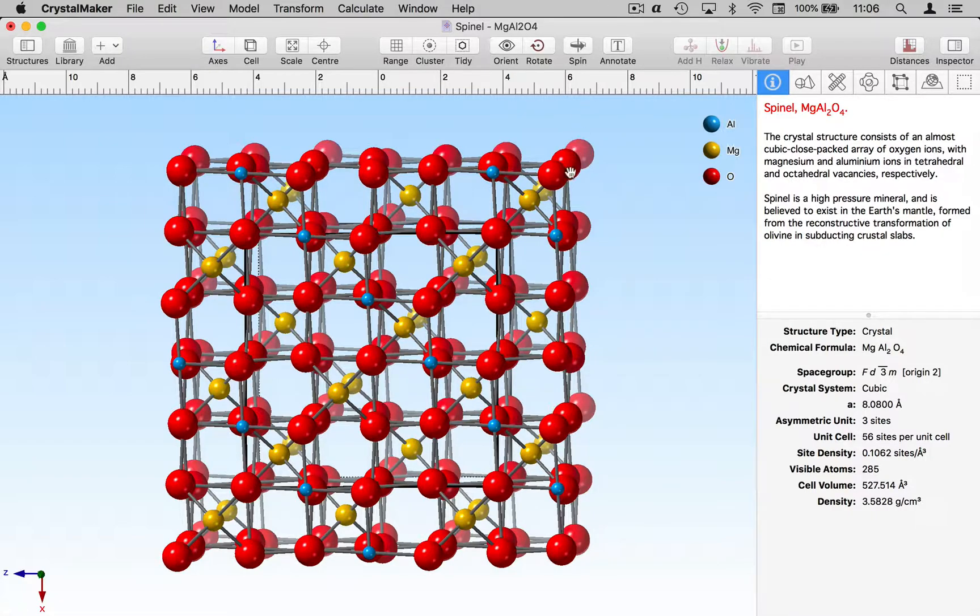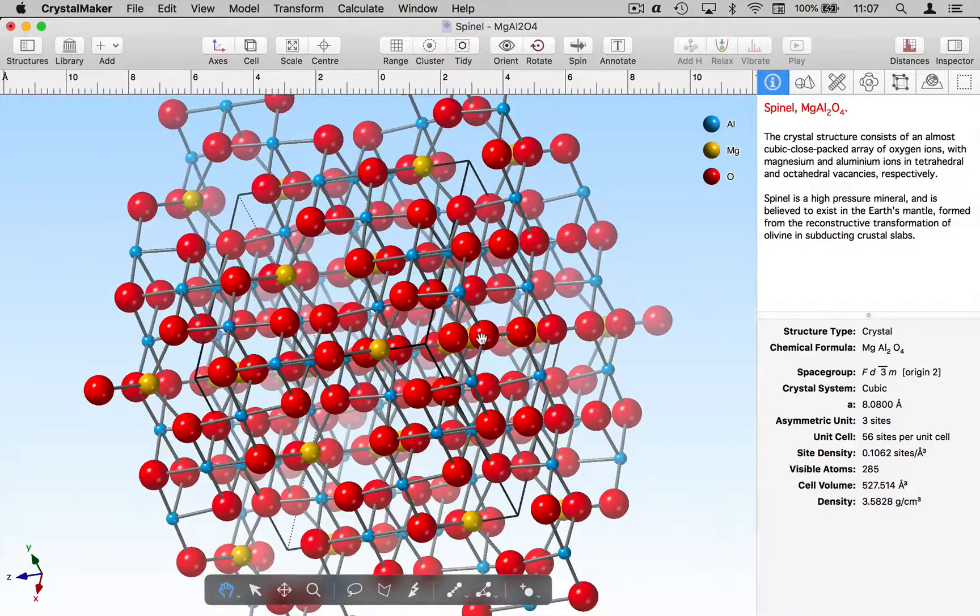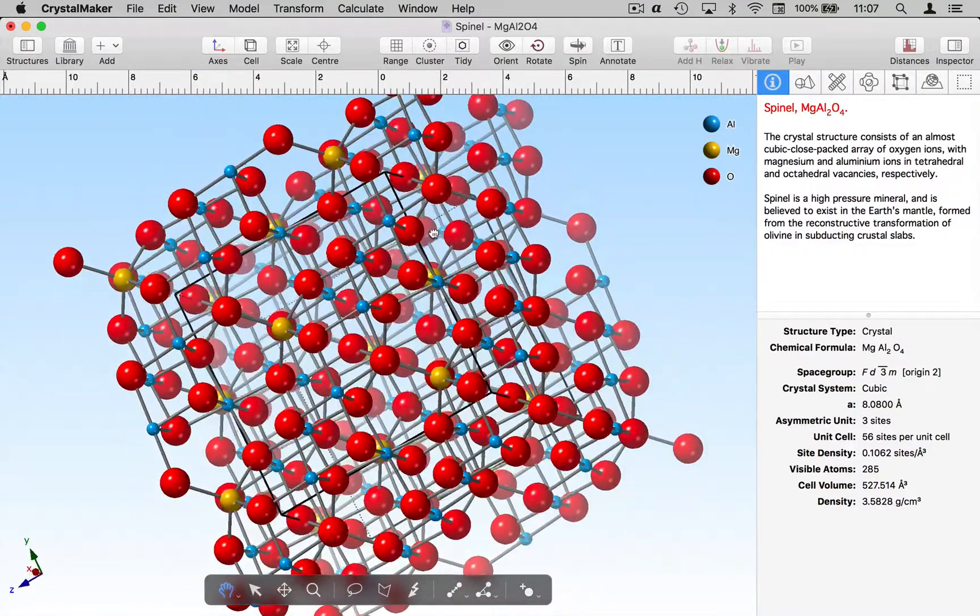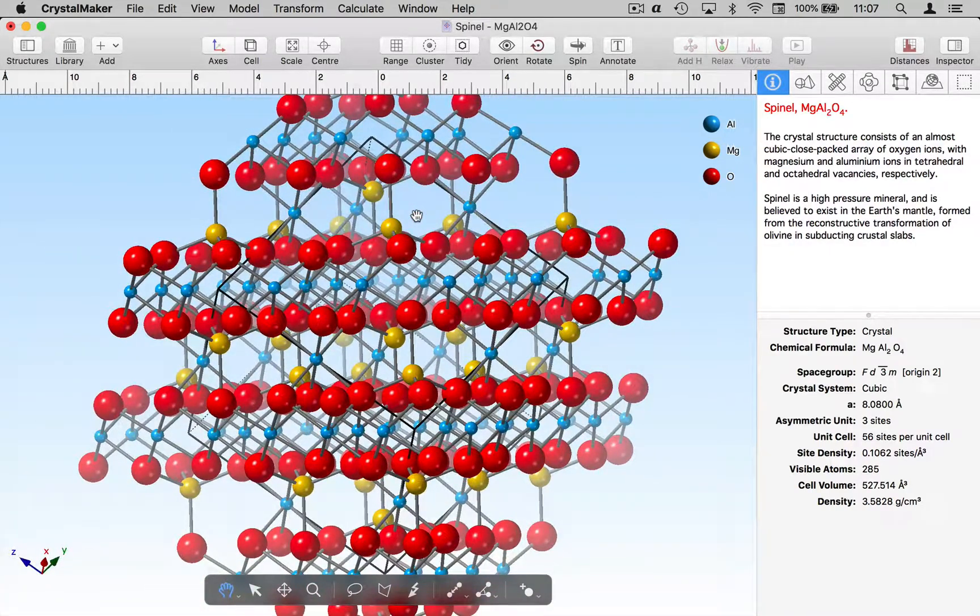So here I'm starting off with one unit cell of the spinel structure, and in this particular structure we have quasi close-packed layers of oxygen and I want to try and insert a molecule onto one of these layers.